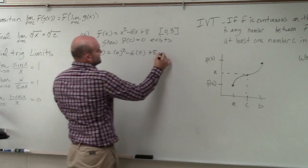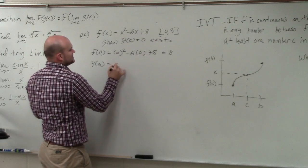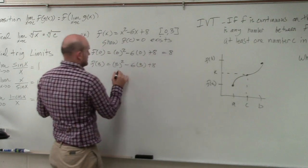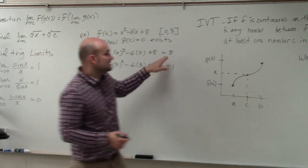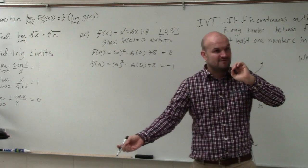When we do that, we get 8. When we evaluate for f(3), we get that becomes 9, negative 9 equals negative 1. Do you see we started off with a positive number on our interval and we ended with a negative number?